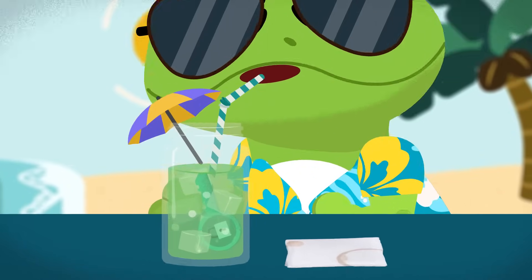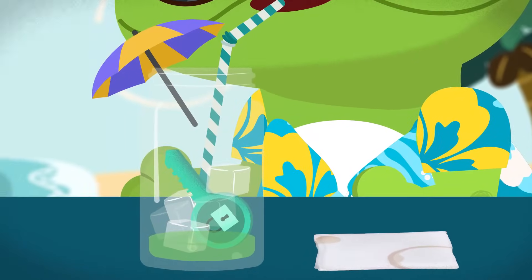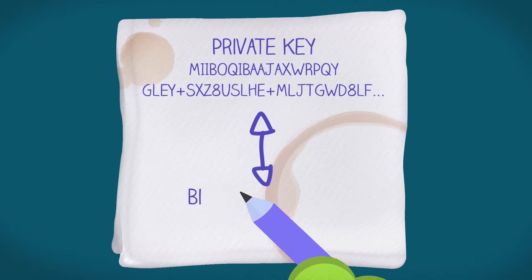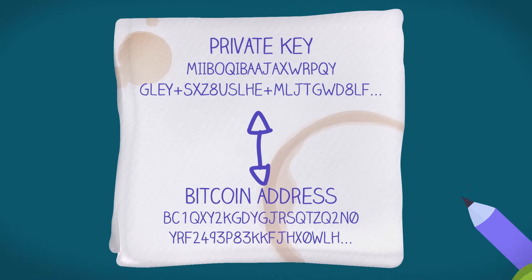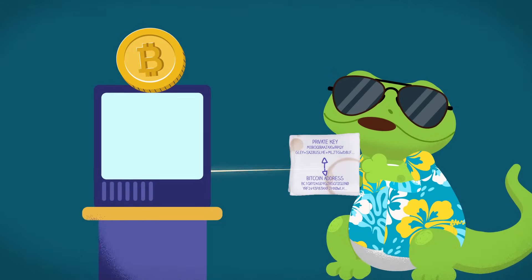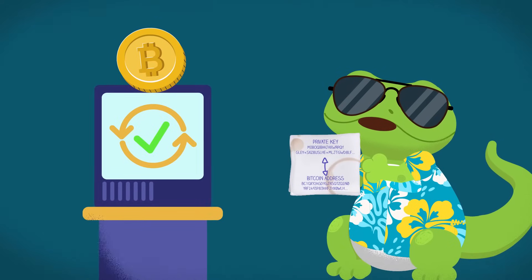Before that, though, a quick refresher on private keys. A private key is a long string of alphanumeric characters that is generated alongside a blockchain address. This key is needed to access and approve transfers of funds for that particular address.